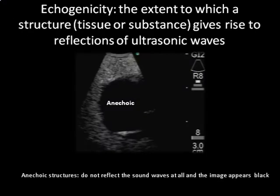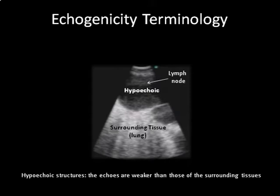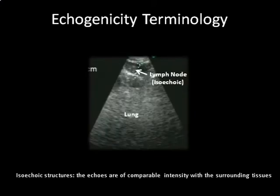Ultrasound images are displayed on what is called a gray scale. The echogenicity of various tissues is defined by the amplitude of the reflected ultrasound wave. In this figure, the round structure is a blood vessel, which does not reflect sound waves at all — the structure is called anechoic. When echoes are stronger than those seen in surrounding tissues, the structure is hyperechoic, whereas when echoes are weaker, the structure is hypoechoic. This lymph node is hypoechoic, but this one is isoechoic, because the echoes are of comparable amplitude with the surrounding lung tissue.